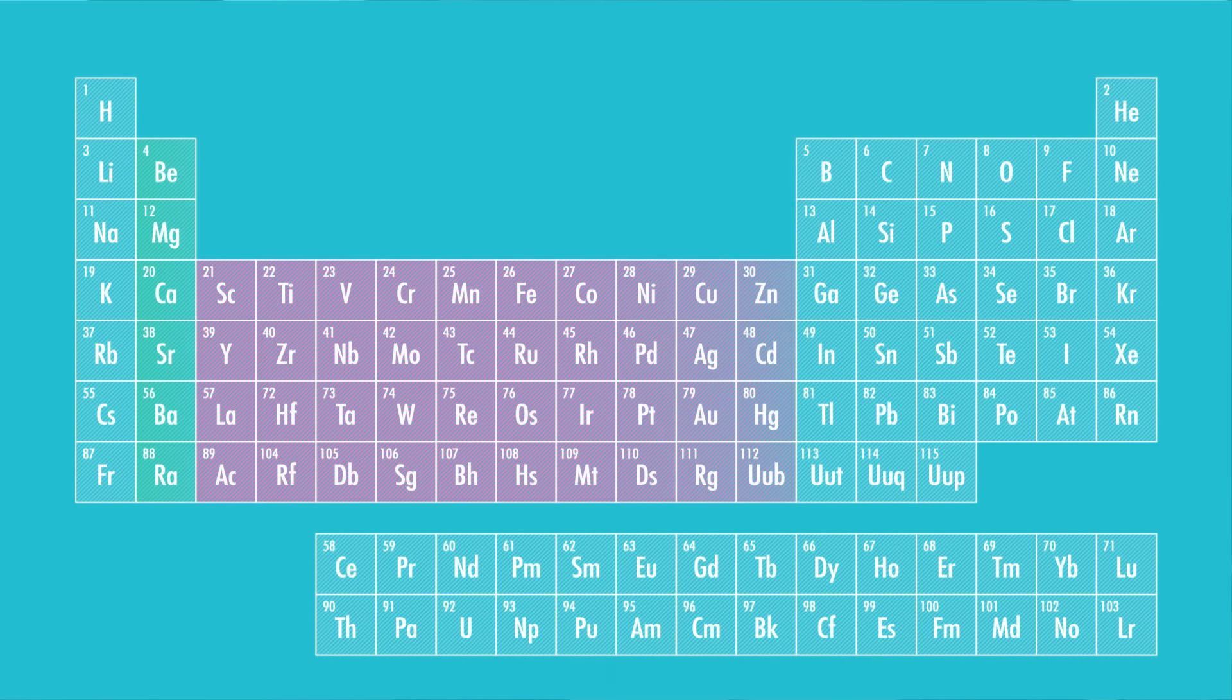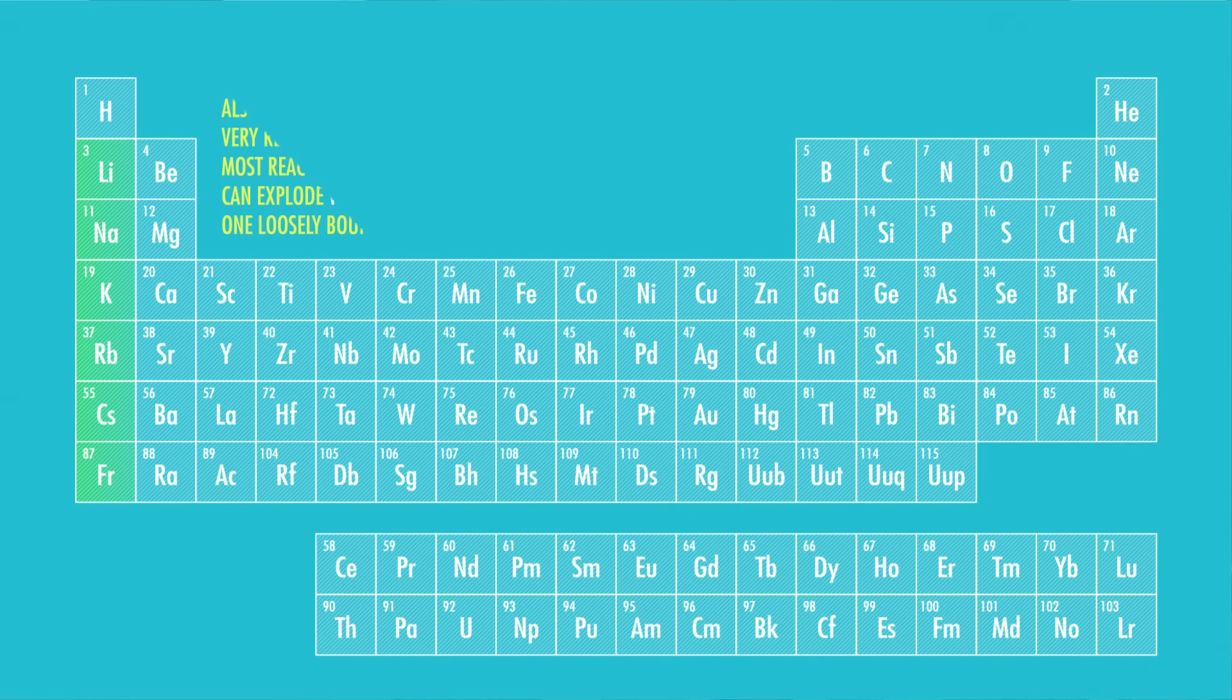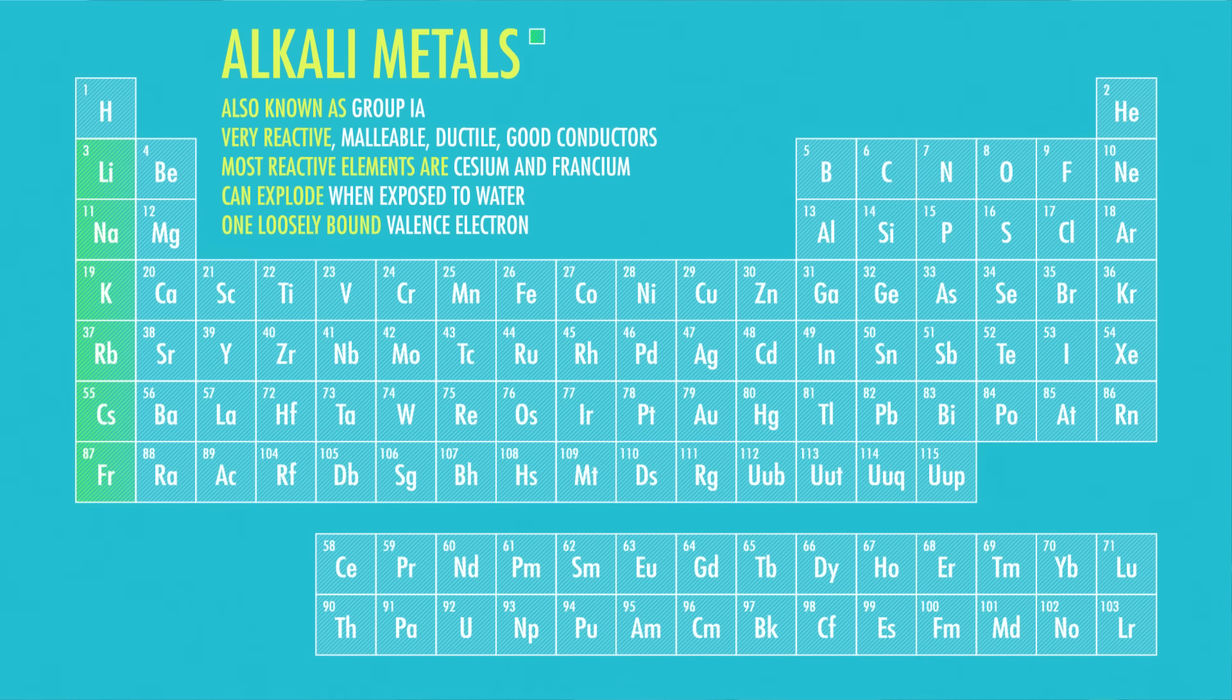The different groups Mendeleev had identified are a lot of the same groups that we study today. Starting at the left, we have the soft, shiny, extremely reactive alkali metals. So reactive, in fact, that they have to be stored in inert gases or oil to prevent them from reacting with the atmosphere. Alkali metals want nothing more than to dump off an electron and form a positive ion or cation.